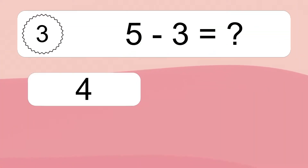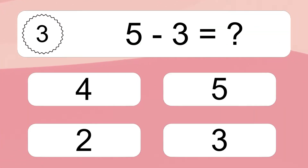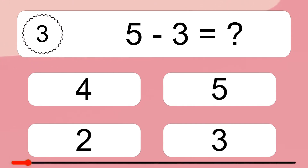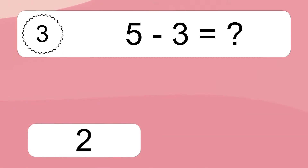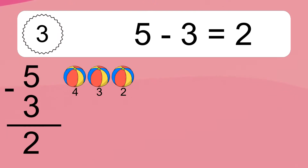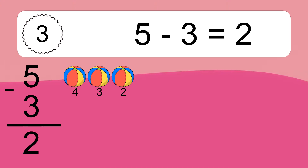5 minus 3 equals what? 5 minus 3 equals 2. Let's count it: 4, 3, 2.